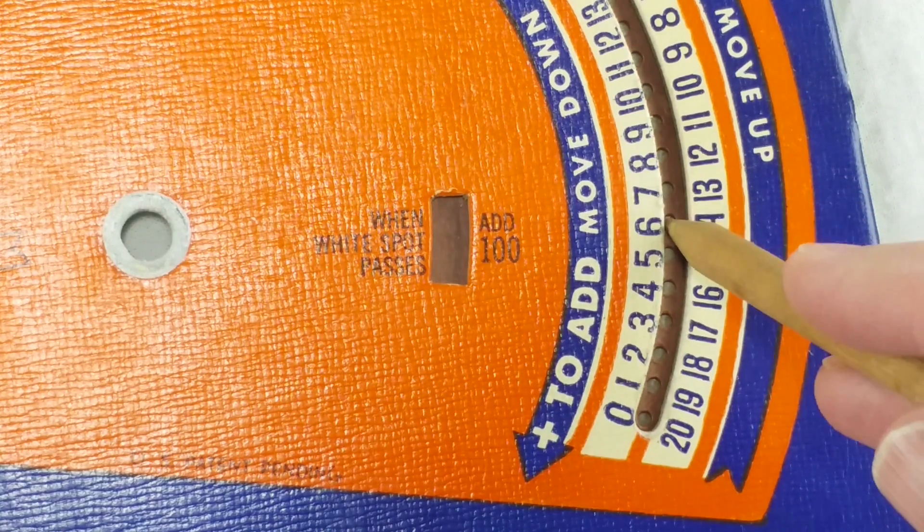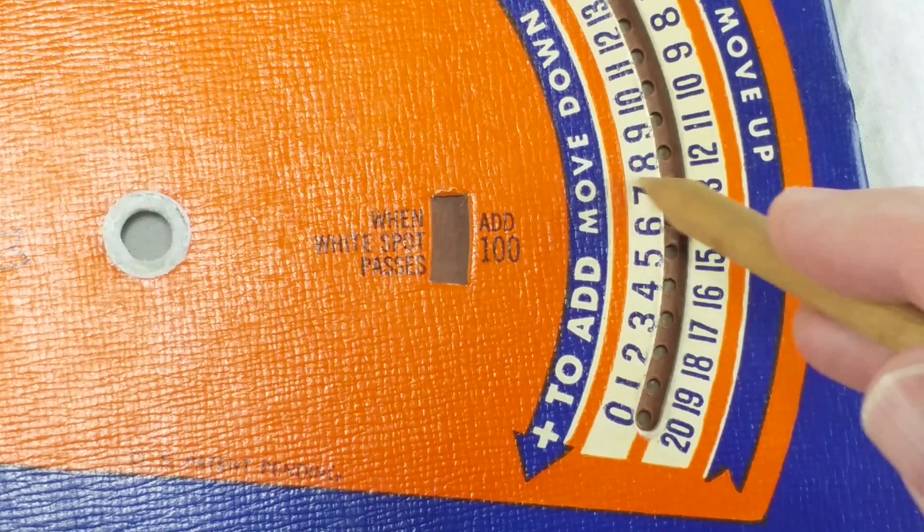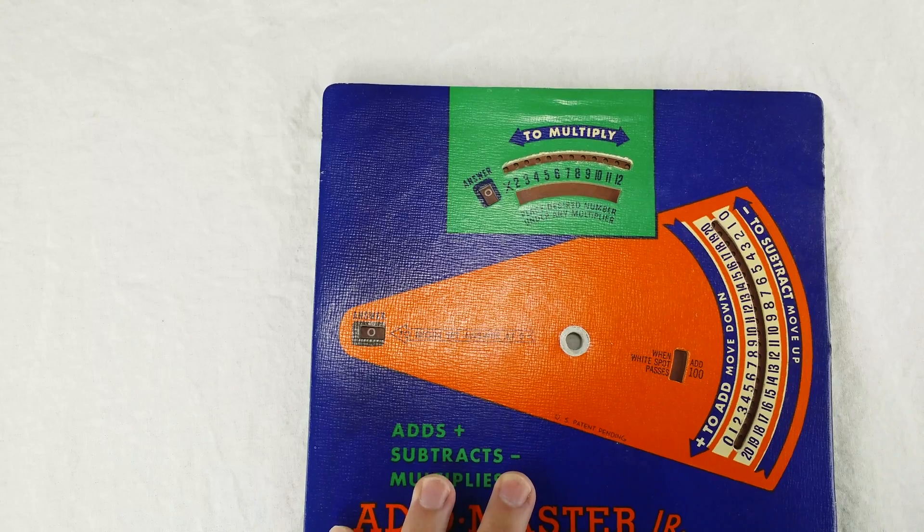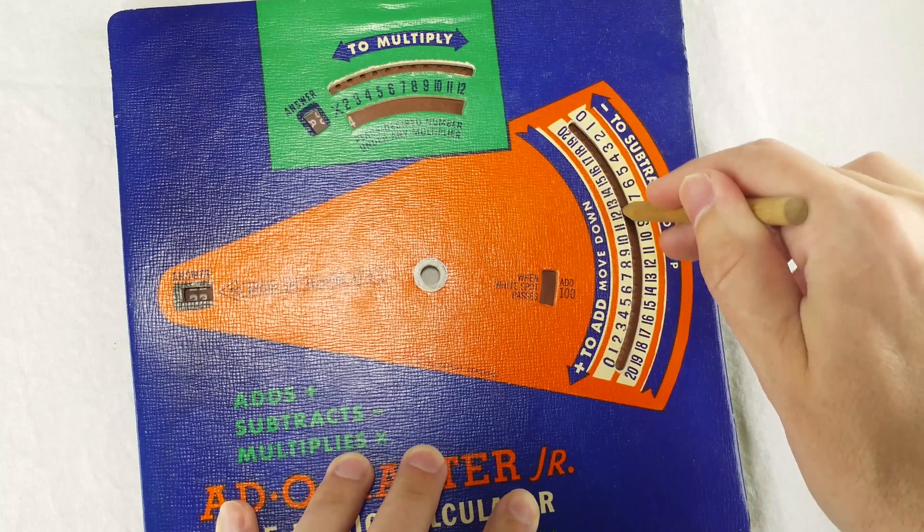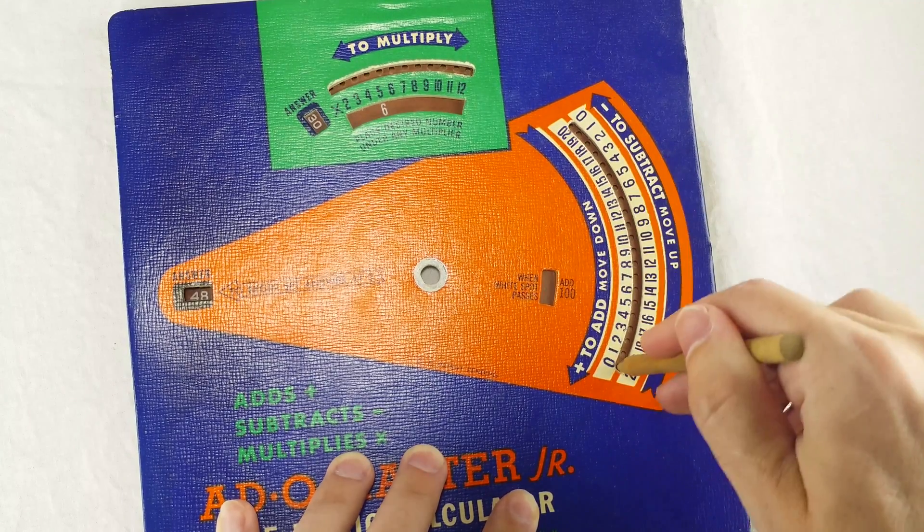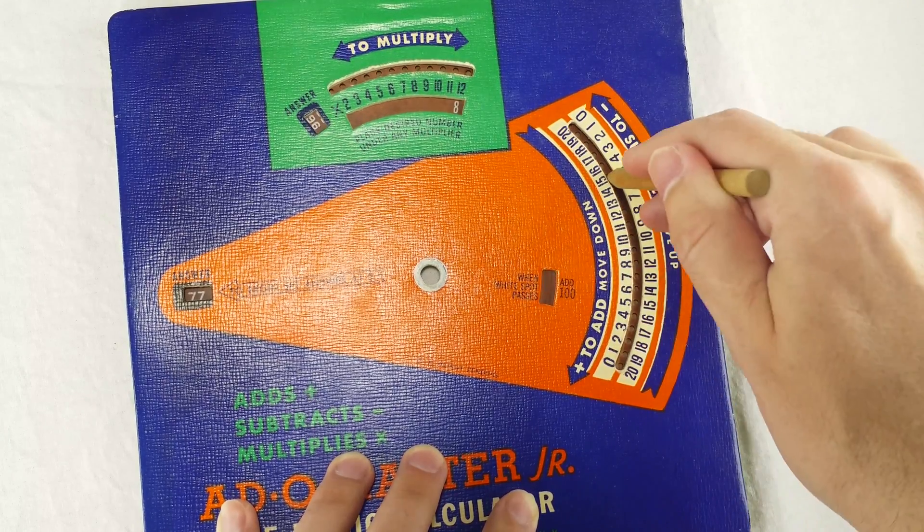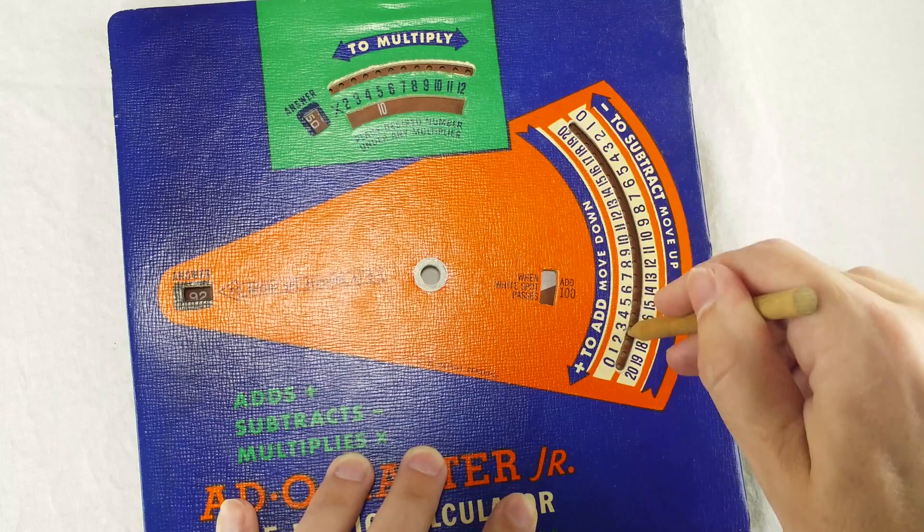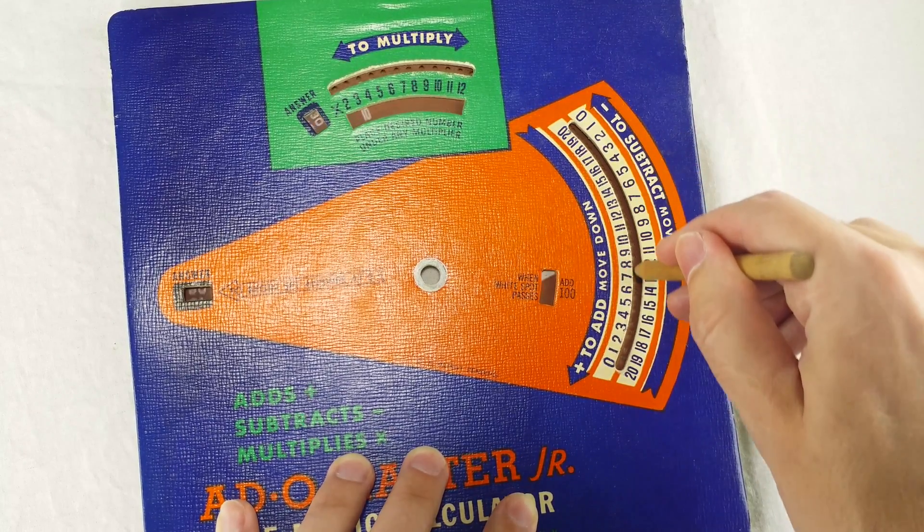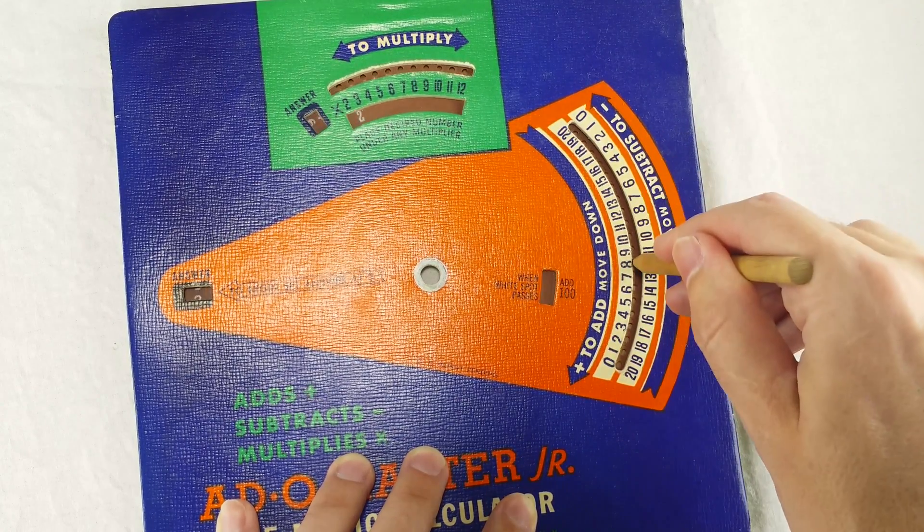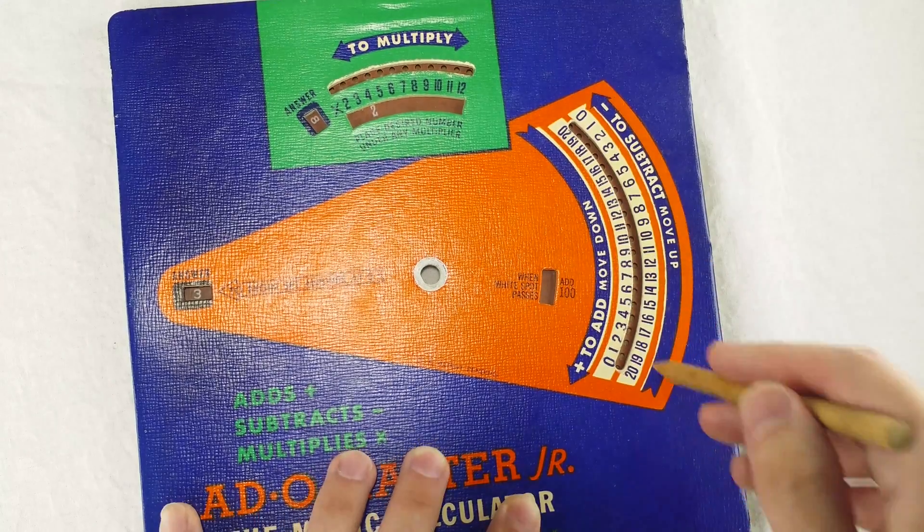And to help you out, you get this little window here. 'Add 100 when white spot passes.' So as you're adding, you've got to watch this window and make sure you don't miss the white spot flying by. You ready? They actually did this pretty well. I was expecting a tiny spot that you would easily miss, but they put a giant, pretty noticeable spot there, which I guess is as good as they could have done.